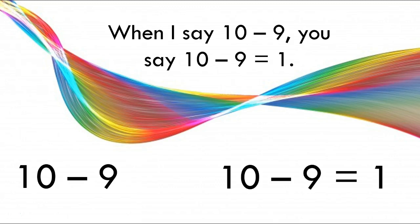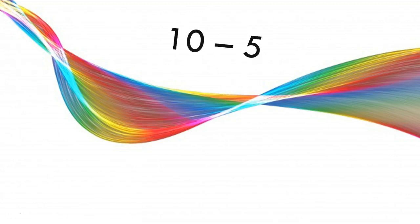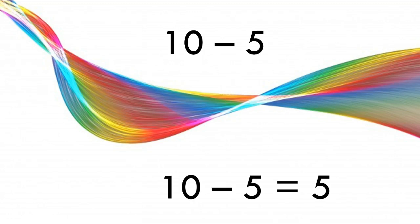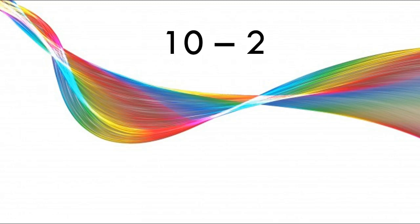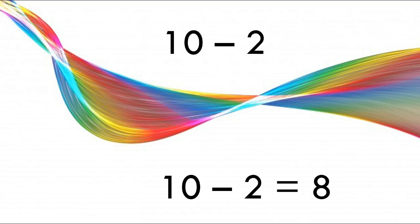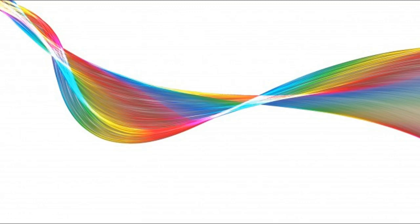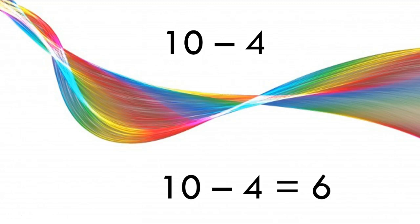10 minus 9 equals 1 — very good! Okay, 10 minus 5. Did you say 10 minus 5 equals 5? If you did, give yourself a kiss on the brain! Here's your next one: 10 minus 2. Did you say 10 minus 2 equals 8? Excellent job! Here's another one: 10 minus 4. Did you say 10 minus 4 equals 6? If you did, give yourself a kiss on the brain!